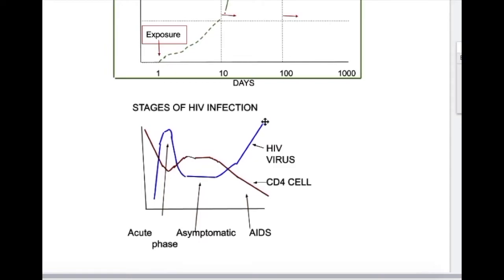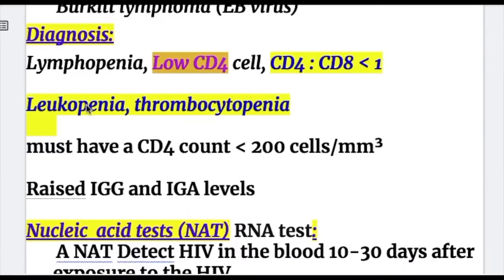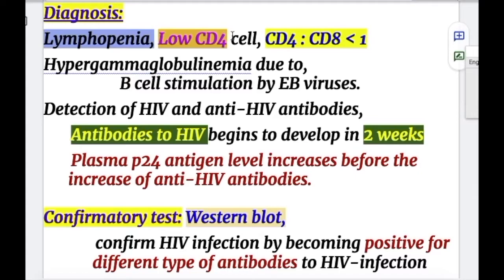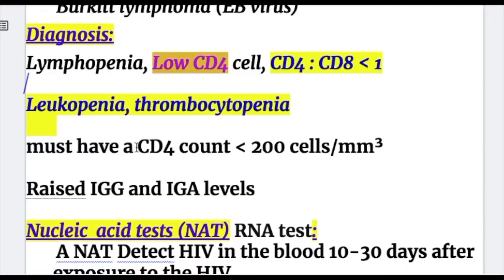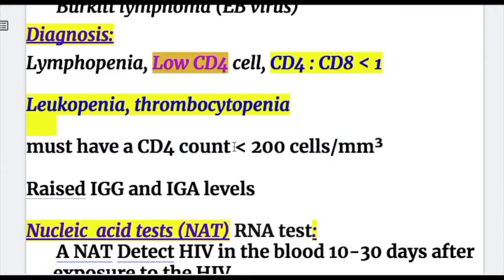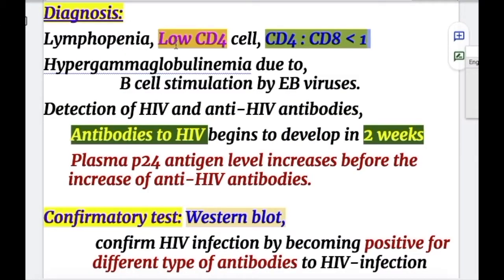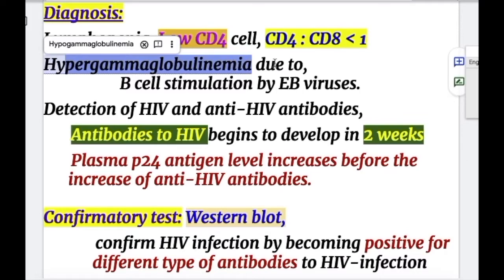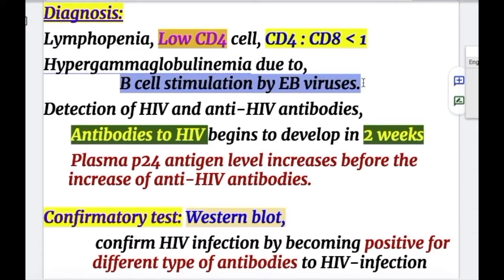In advanced HIV disease, the virus has increased and CD4 cells are markedly decreased. There is leukopenia, thrombocytopenia, and lymphopenia. The CD4 cell count falls below 200 cells per cubic millimeter, and the CD4 to CD8 ratio is less than 1. There is also hypergammaglobulinemia due to immune activation from B cell stimulation by the EBV virus.